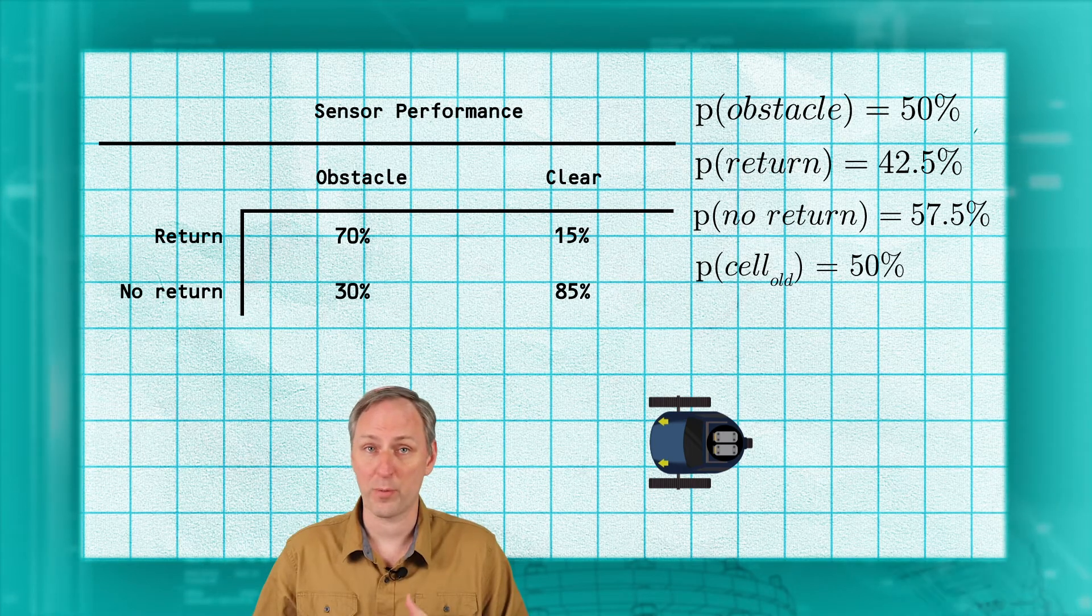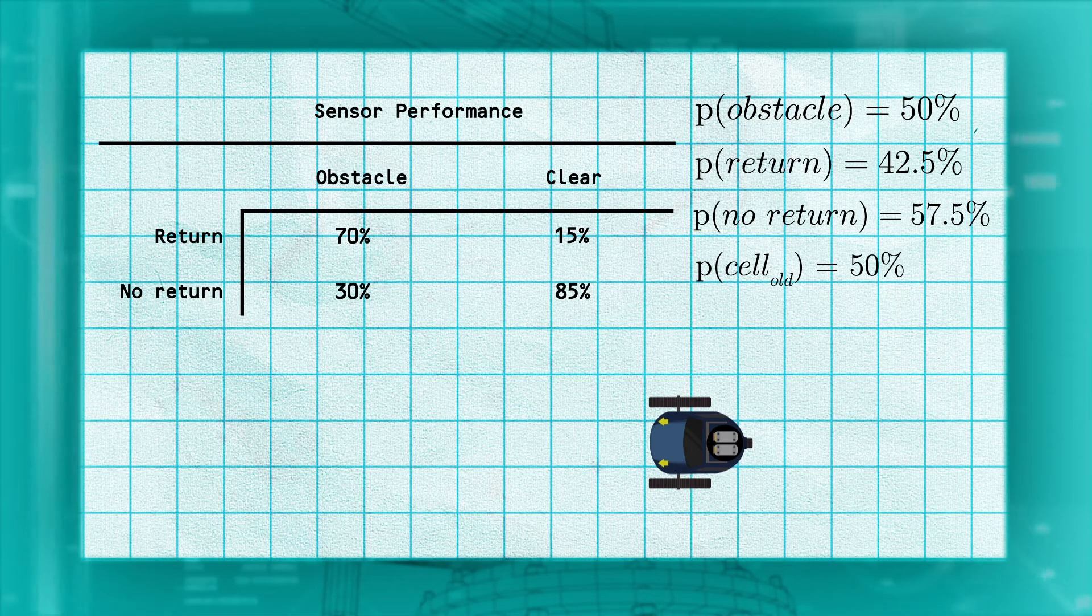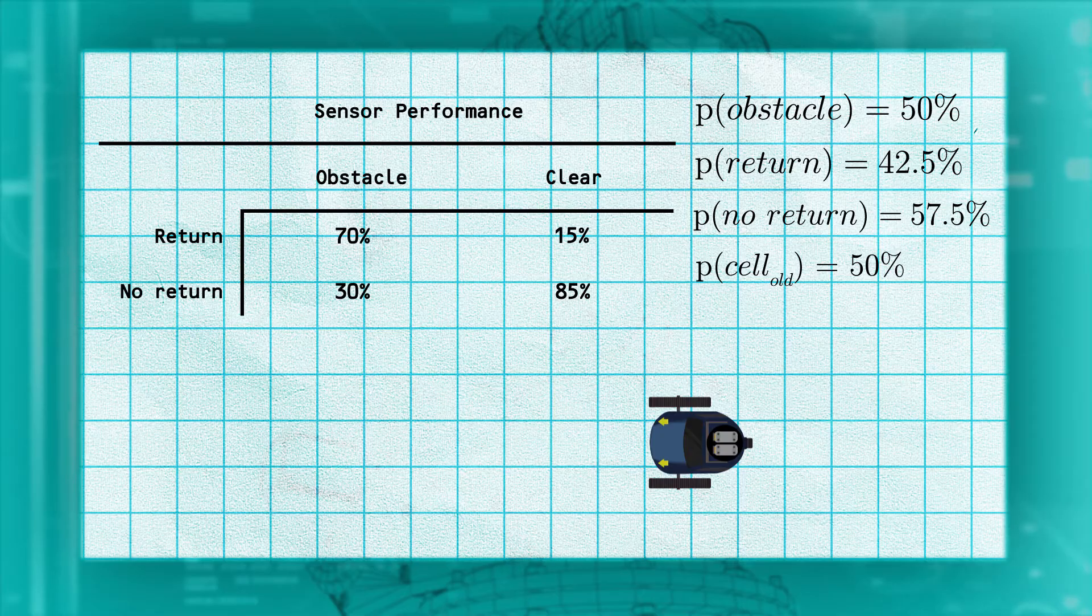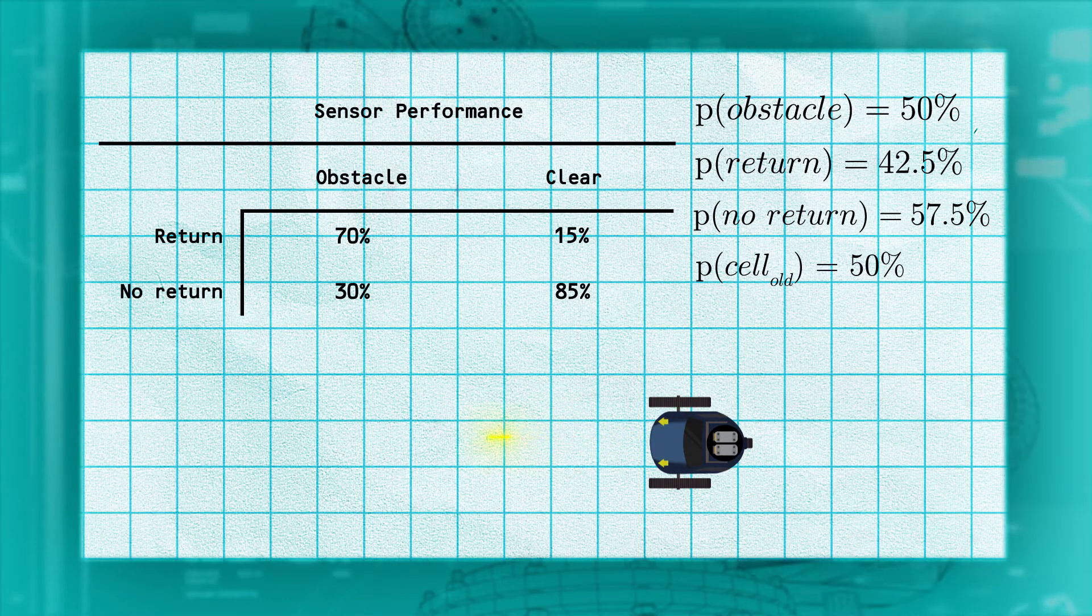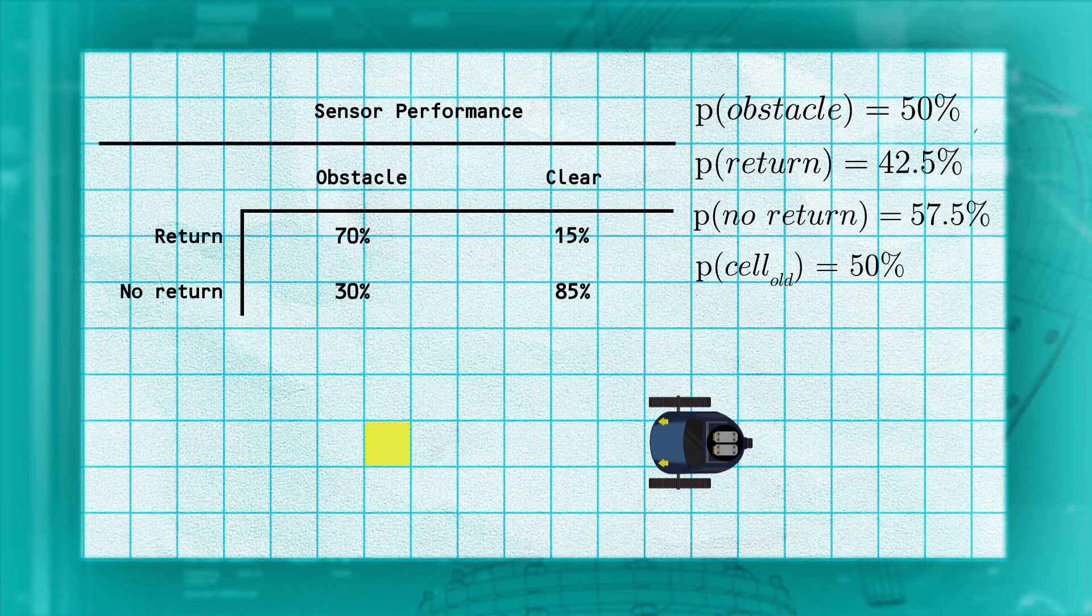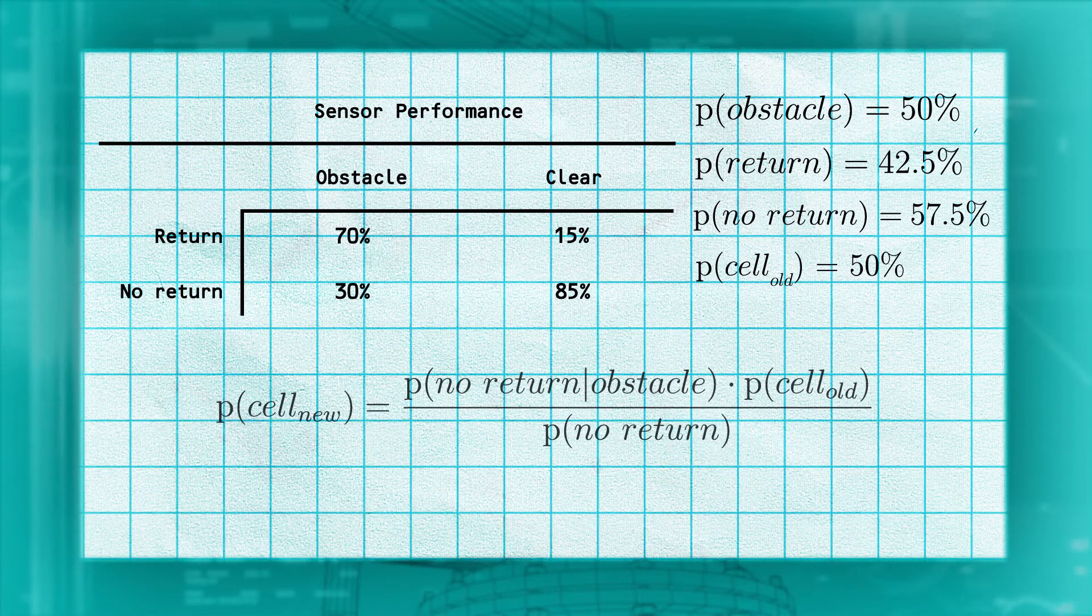For the cells we are clearing, we perform the same process. For this cell, between our obstacles and the robot, we know the LIDAR beam went through it without a return. Returning to Bayes' theorem, we again want the probability that the cell is an obstacle, given that there was no return.